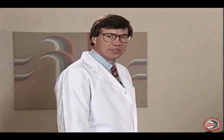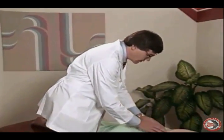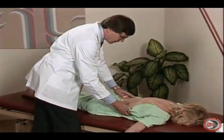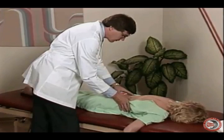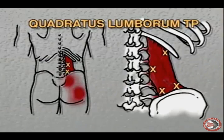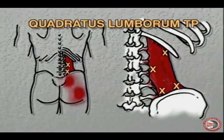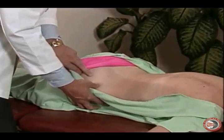Now let's go to the muscles of the trunk and lower extremities. The first muscle to evaluate is the quadratus lumborum. This muscle is evaluated by bringing the hand from the side with the thumb into the muscle, looking for a taut band or trigger point. This muscle refers pain into the buttock and the low back area, and can mimic a facet syndrome or an SI joint dysfunction problem.